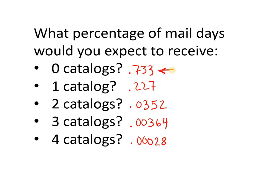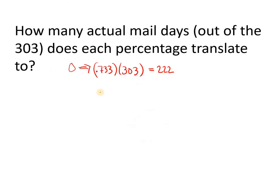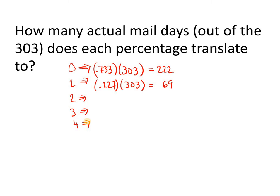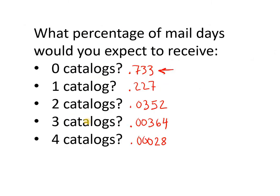You'd expect to get one catalog 0.227 of the time. So out of those 303 days: 0.227 times 303 = 68.7, we'll round to 69. You can do the same thing for 2, 3, and 4 — just multiply those probabilities by 303. Let's jump straight to the punchline.